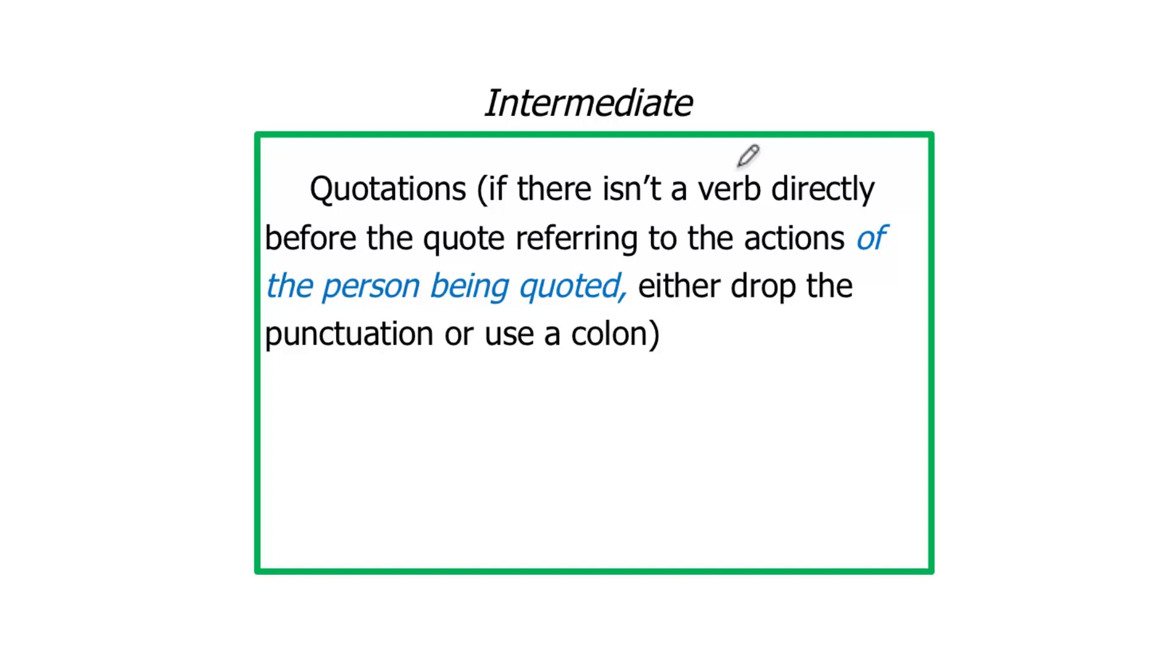Quotes can begin at the sentence. But much of the time we have these little introductions and this aspect of, is this an actual utterance? What I mean is that this verb here that comes directly before the quote, is this something that was actually said or done or written by the person being quoted? The saying. Who did the saying? The teacher. If there isn't a verb directly before the quote that refers to the actions of the person being quoted, we either drop the punctuation entirely or we use a colon.